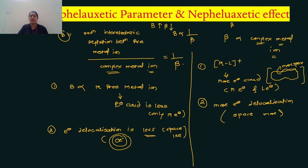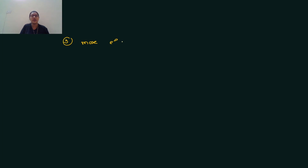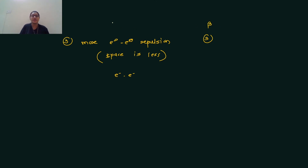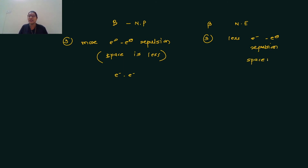Third point: in the nephelauxetic parameter case — the free metal ion — there is more electron-electron repulsion, because the space is less, so more electron-electron repulsion takes place. In the case of the nephelauxetic effect — the complex — there is less electron-electron repulsion, because the space is more, therefore less electron-electron repulsion.